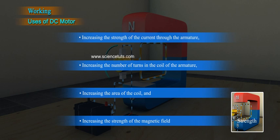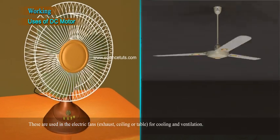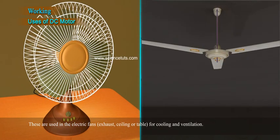Uses of DC motor: These are used in electric fans, exhaust, ceiling or table for cooling and ventilation.